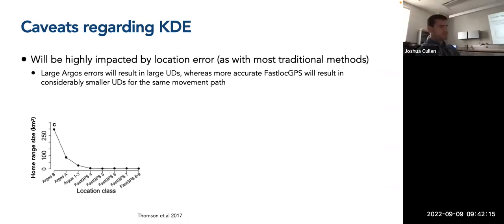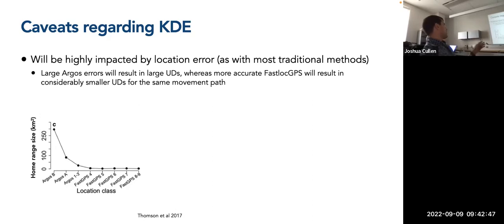This figure from Thompson and colleagues shows the estimated size of a utilization distribution when considering only a set of points from different location classes, whether for Argos or FastLoc GPS. Starting from the left side of the x-axis, the home range shown on the y-axis is very large, then drops off precipitously moving from class B to class A, and then from class A to classes one through three for Argos. Once you hit FastLoc GPS for four satellites all the way up through nine satellites, the UD estimate is stable and very small by comparison, especially to the A and B classes of Argos.